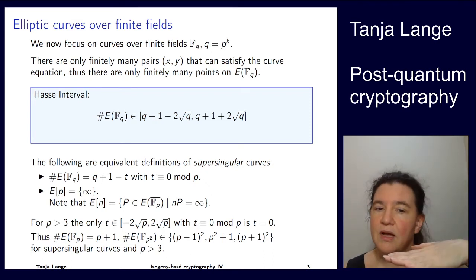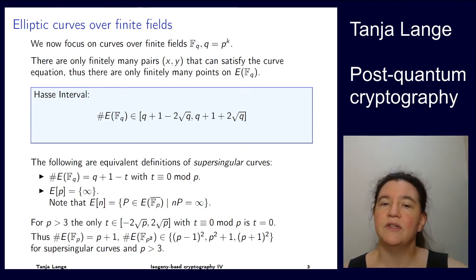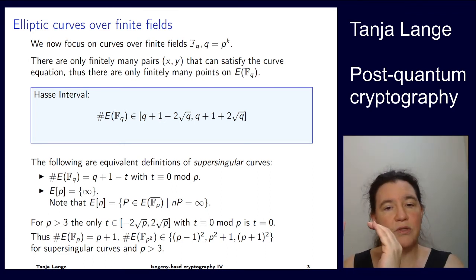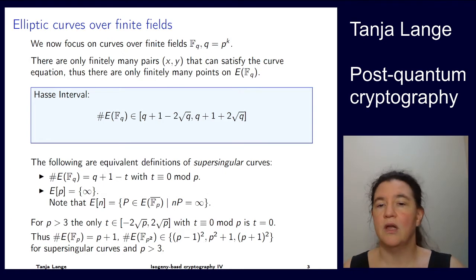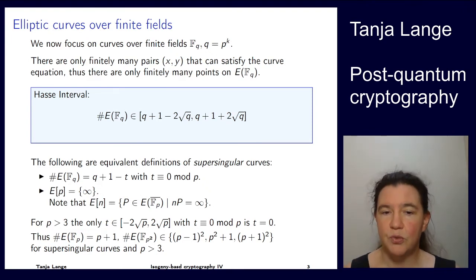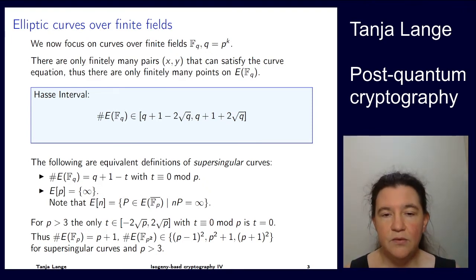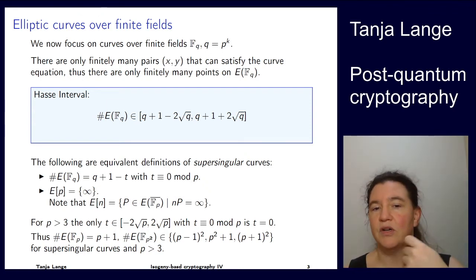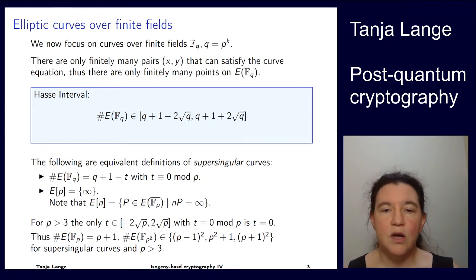If you allow a quadratic extension field, things are a little more interesting: you also see curves with (p−1)², (p+1)², or in the middle the same case as before with t = 0, so p² + 1. But for large primes, looking at F_p or F_{p²}, those are the only three orders that can appear.